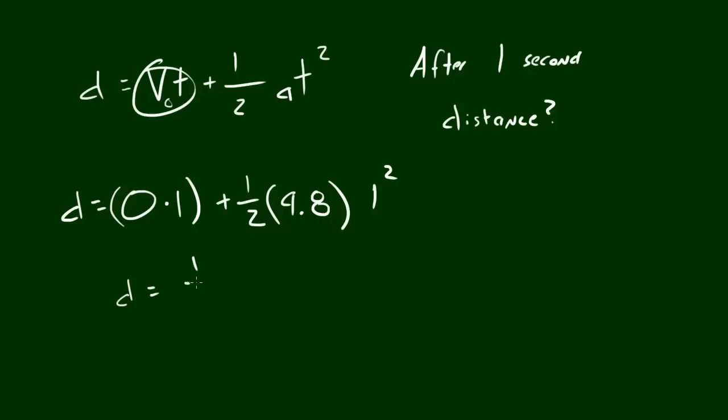So the distance traveled of that tuna can is equal to 1 half times 9.8. So the distance traveled after 1 second is 4.9. And if we go ahead and throw in all our units, we end up with meters. So just remember that. Whenever you drop a tuna can from the top of a building, after 1 second it will be 4.9 meters away from you. Pretty cool, huh?